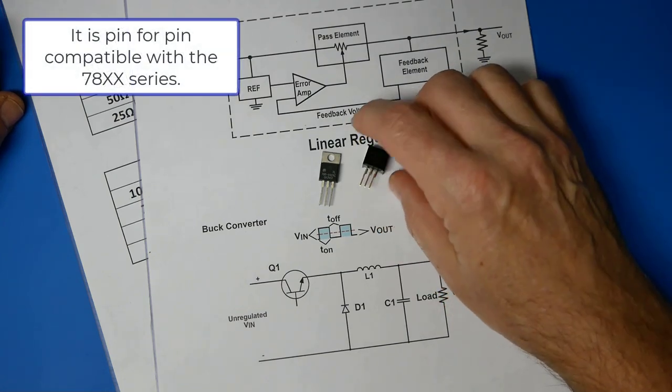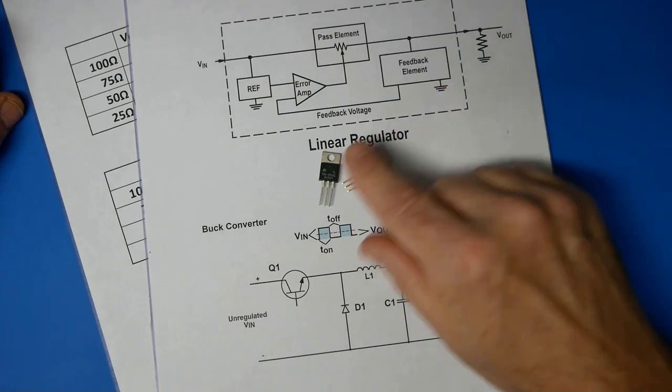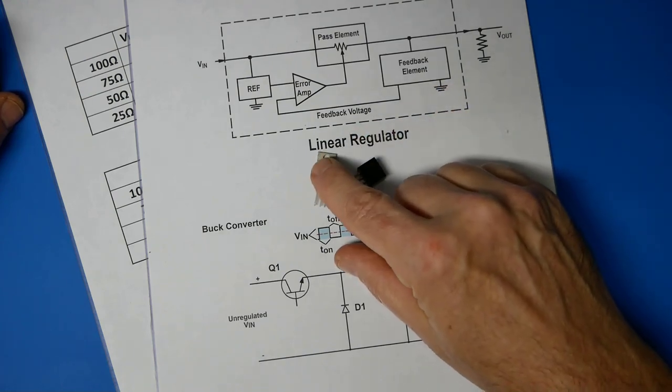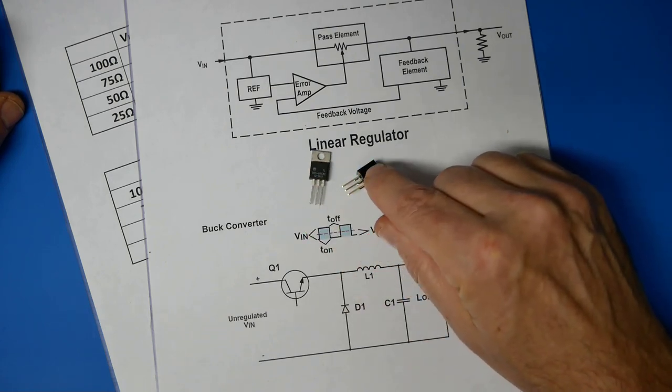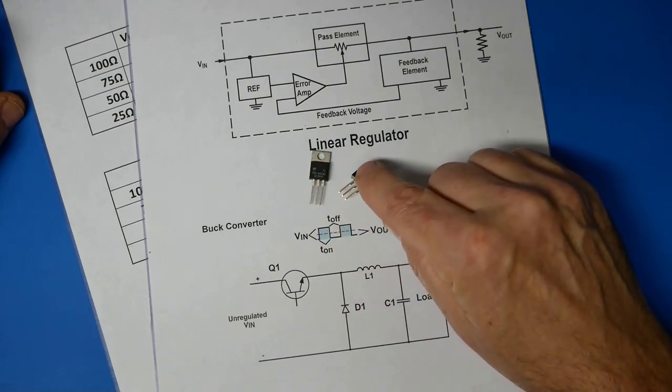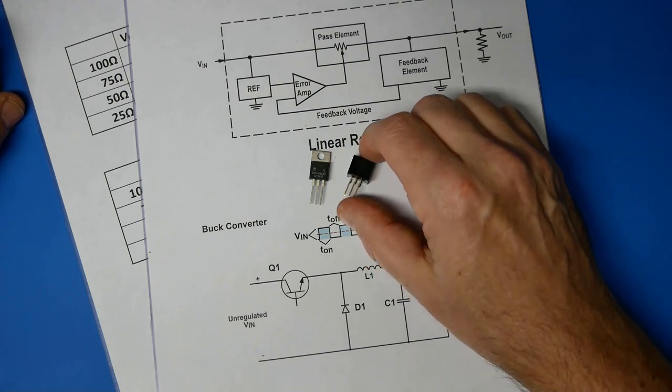But it's a drop-in replacement with very little modification. It actually needs fewer components than a 7805. There's no input capacitor or output capacitor required on these. Now Recom isn't the only company that makes these little regulators, but they're the ones that I have. And so I thought I would test them out.